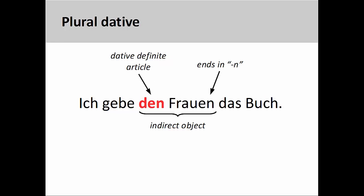The plural dative requires a bit more explanation. In this sentence, 'Ich gebe den Frauen das Buch' — I give the book to the women — the plural dative article 'den' looks the same as the masculine accusative. Also note that the plural form of the noun ends in 'en', so we don't need to do anything else to the noun in this case.